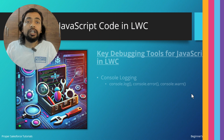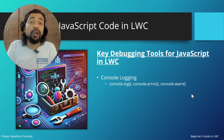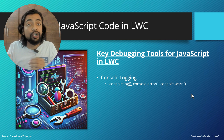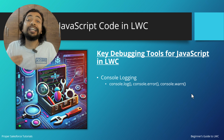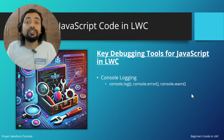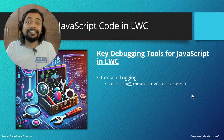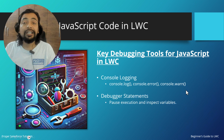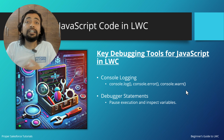Now, key debugging tools for JavaScript in LWC. One of them is console logging — with console.log, console.error, or console.warn we can provide messages on the browser's console screen. These messages are not accessed by the user; they are accessed by the developer to find out what is happening behind the scenes. The debugger statement is another way to perform debugging in JavaScript.